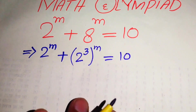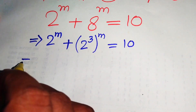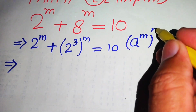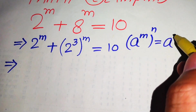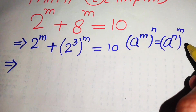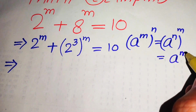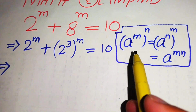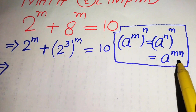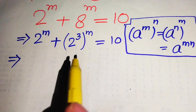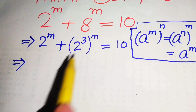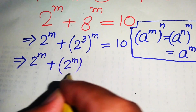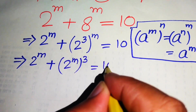In the next step we need some simplification and we use the exponential law: if we have a to the power of m, to the power of n, it equals a to the power of m multiplied by n. This law tells us that if we interchange the two exponents we get the same answer. So we rewrite the equation as 2 to the power of m plus 2 to the power of m, and its whole cubed, equals 10.